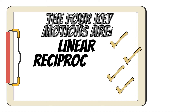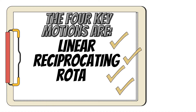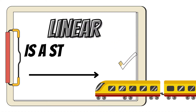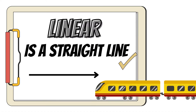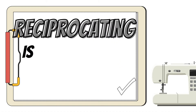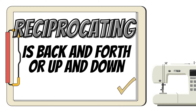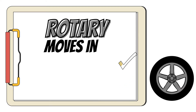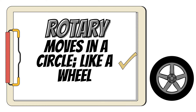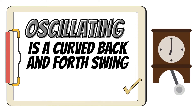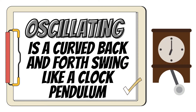So what are the key takeaways of this video? The four key motions are linear, reciprocating, rotary, and oscillating. Linear is a straight line, like a train. Reciprocating is back and forth and up and down, like a piston. Rotary moves in a circle, like a wheel. Oscillating is a curved back-and-forth swing, like a clock pendulum.